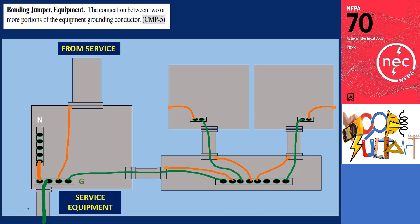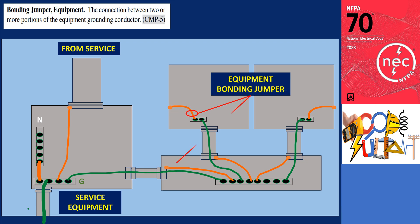An equipment bonding jumper refers to the connection between two or more sections of the equipment grounding conductor. These bonding connections are made between different portions of the equipment grounding system. For example, the bonding between metal raceways, the grounding bus terminal, and the panelboard enclosure bonding would be classified as an equipment bonding jumper.